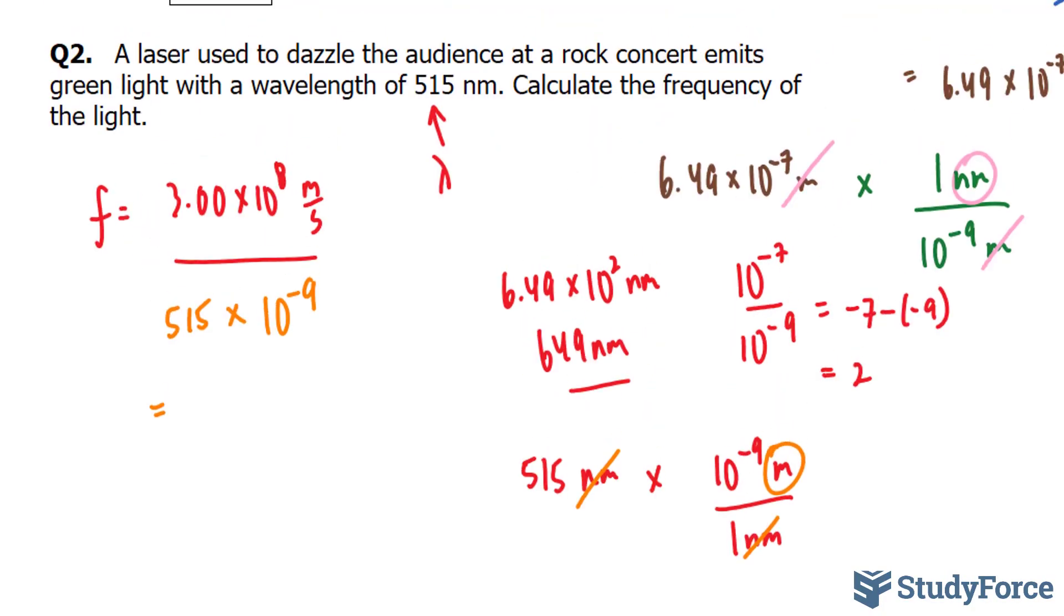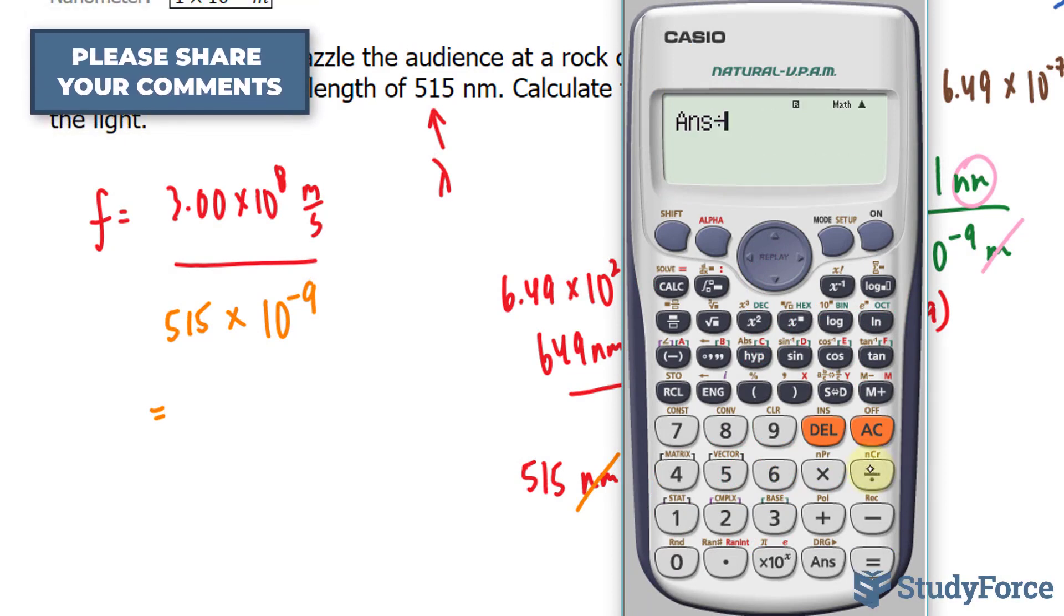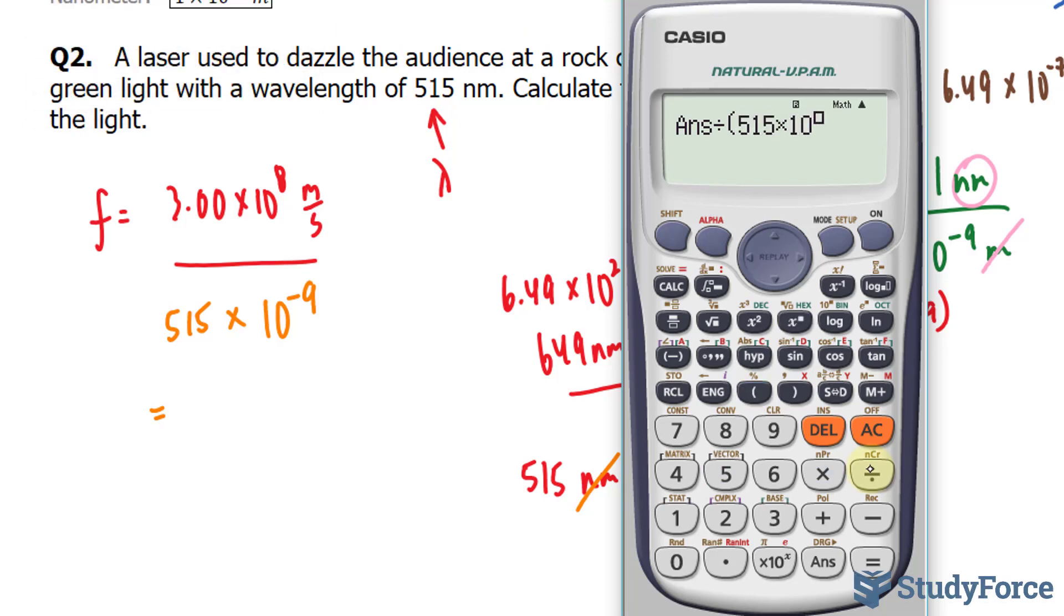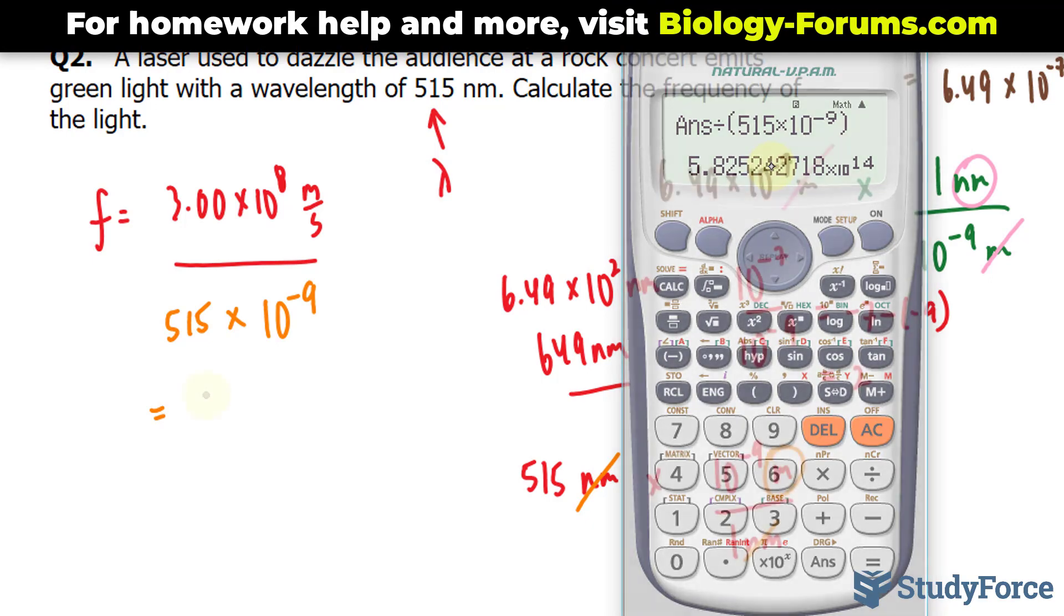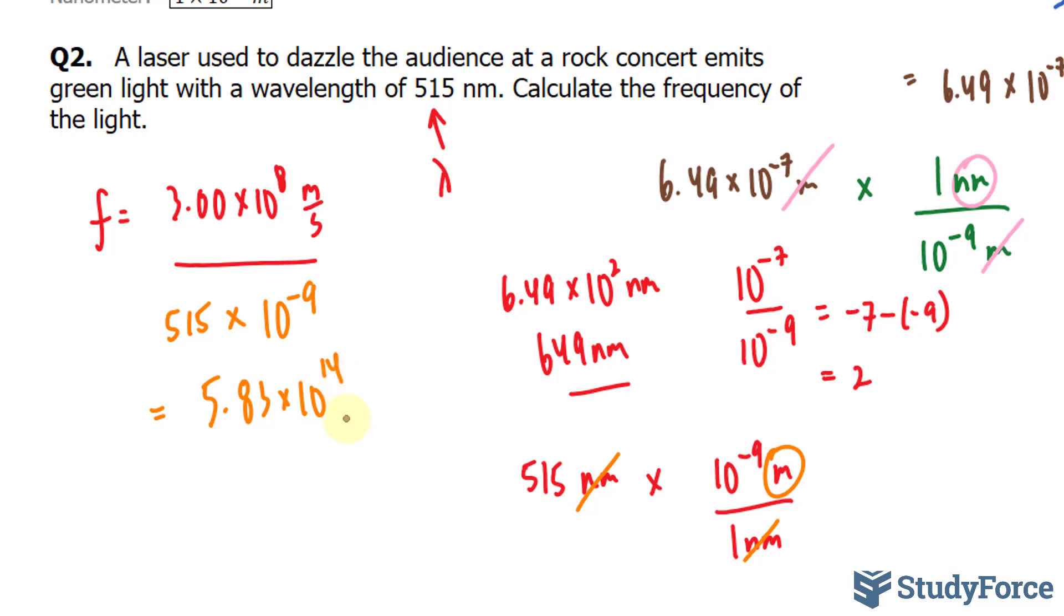Let's use our calculator to figure this out. 3.00 times 10 to the power of 8 divided by 515 times 10 to the power of negative 9. This gives us approximately 5.82 times 10 to the power of 14. We need this to three significant figures, so it should be 5.83 times 10 to the power of 14 per second, or simply hertz.